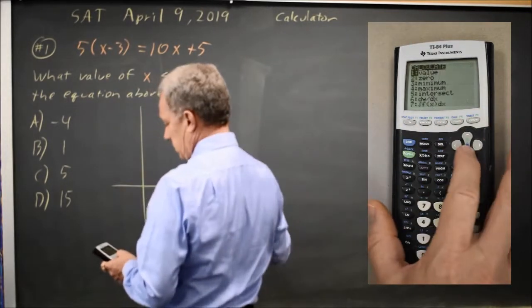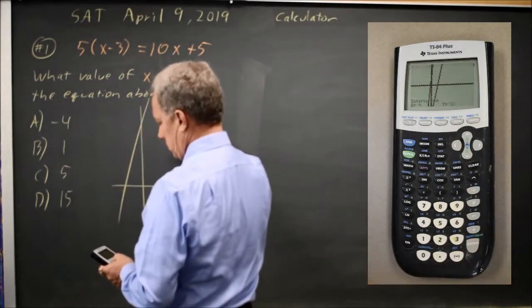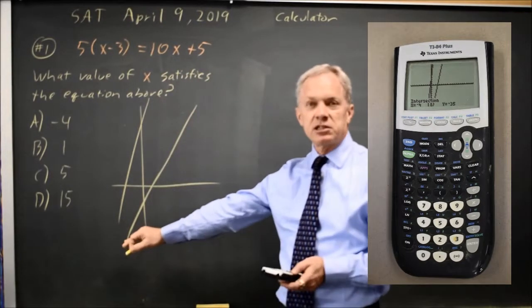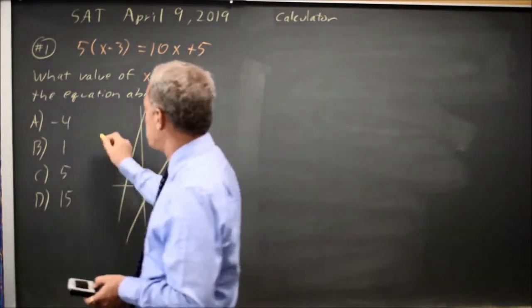My graph looks like this. I can see even though the intersection isn't on my Y window, I can see that the intersection will be someplace where X is negative.